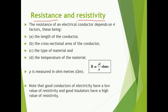The resistance of an electrical conductor depends upon these four factors: the length of the conductor, cross-sectional area of the conductor, the type of the material, and the temperature of the material.